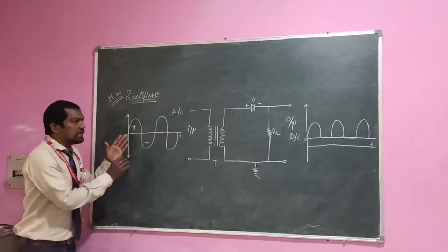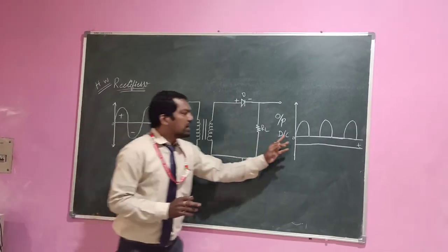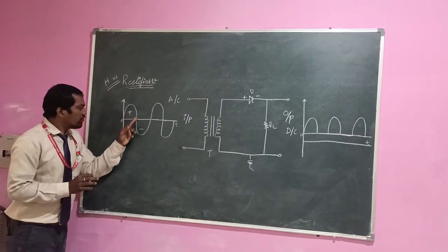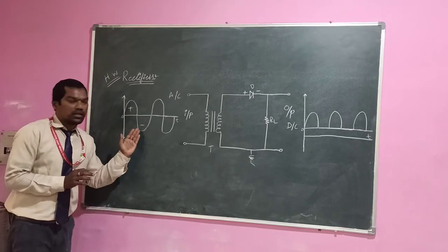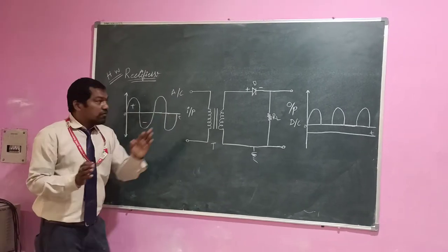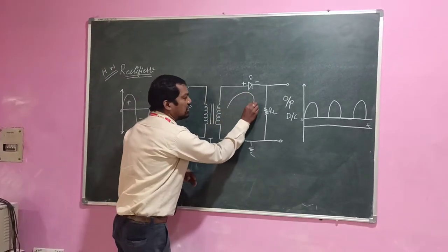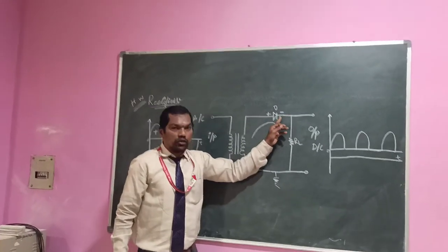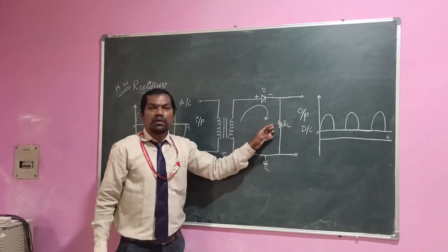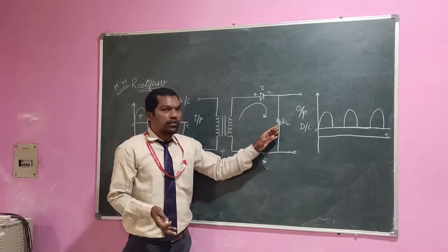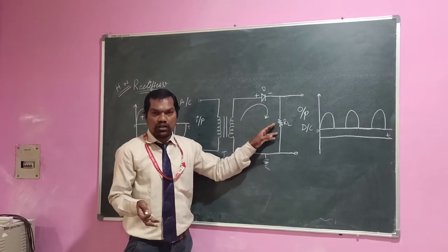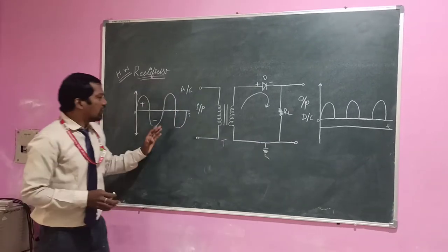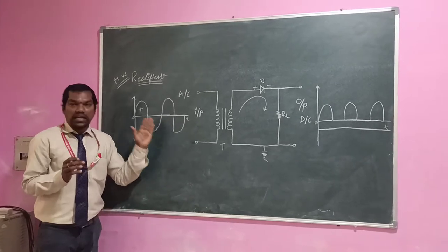Why I am calling it a half wave rectifier — see the output. We are getting only the positive signal. Here I am using a diode. I am giving the positive signal and we are getting the output. In the diode, current passes in one direction. The positive terminal of the transformer is connected to the positive terminal of the diode, and the negative terminal of the diode is connected to the load resistor.